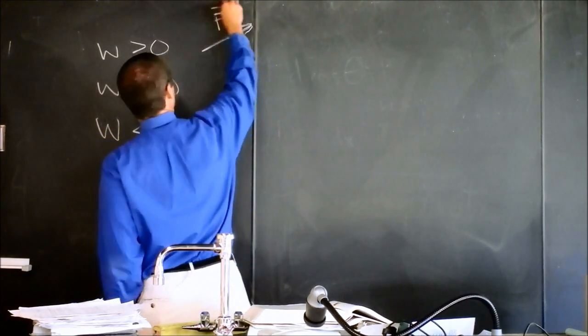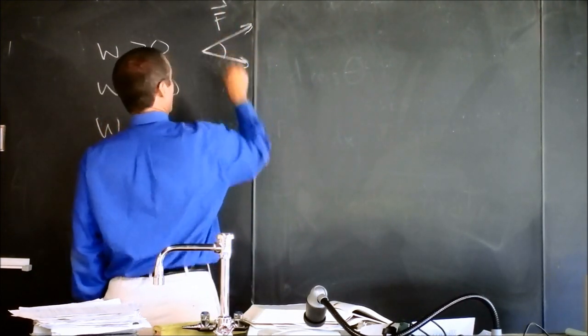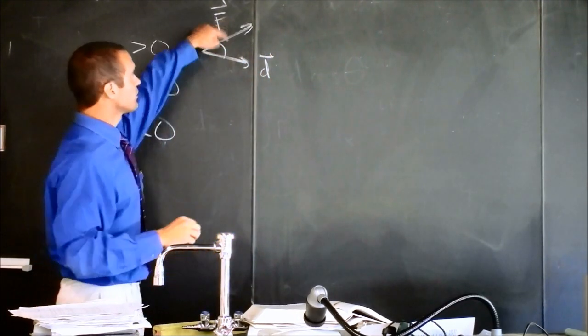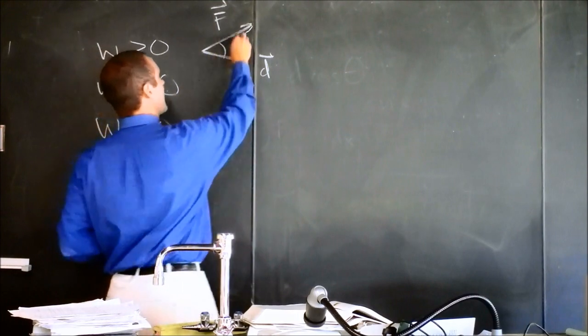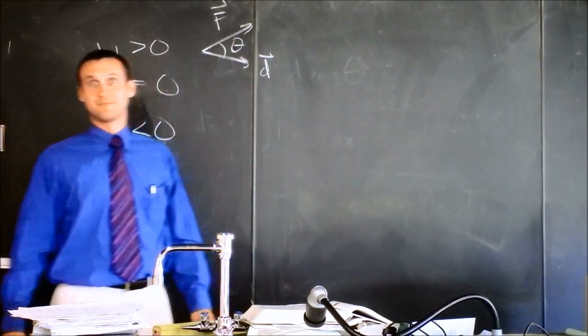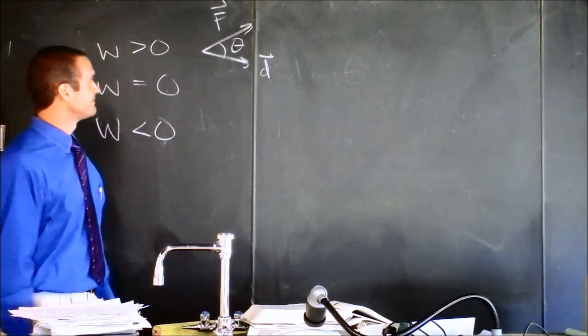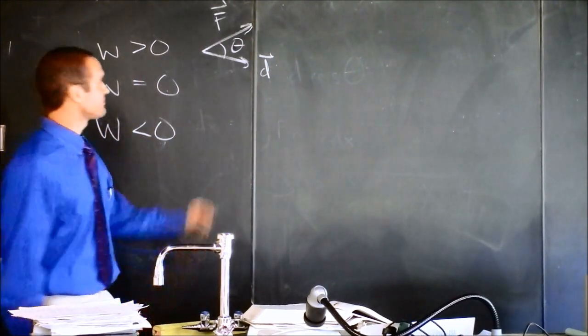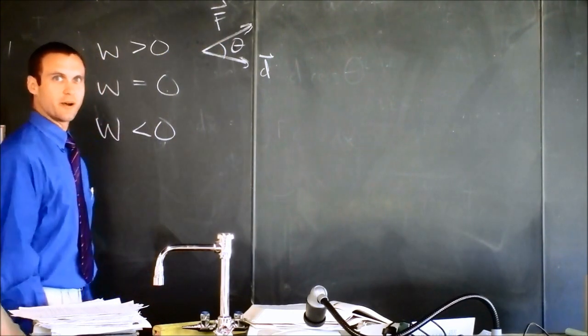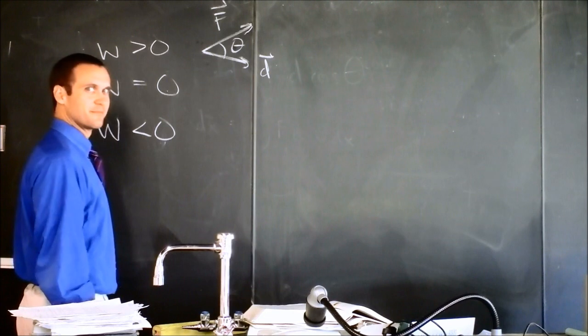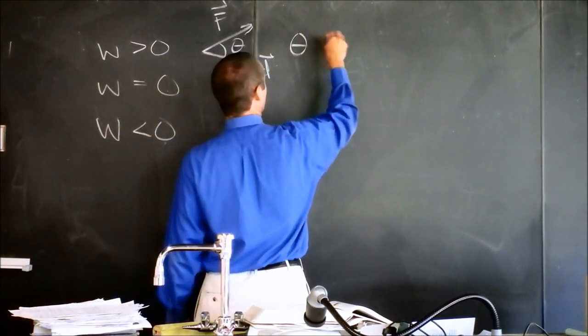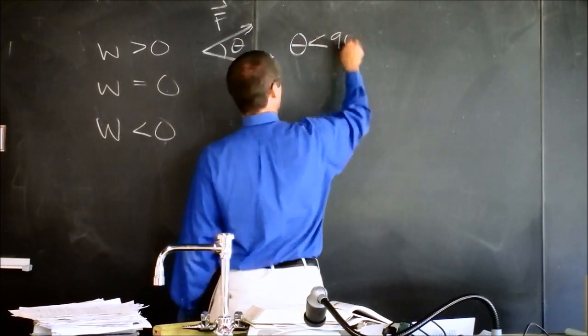Work is greater than zero if the force, let's say this way, if that's our distance vector and that's our force vector, what are the requirements on this angle theta for work to be greater than zero? Up to 90 degrees. So theta must be less than 90 degrees.